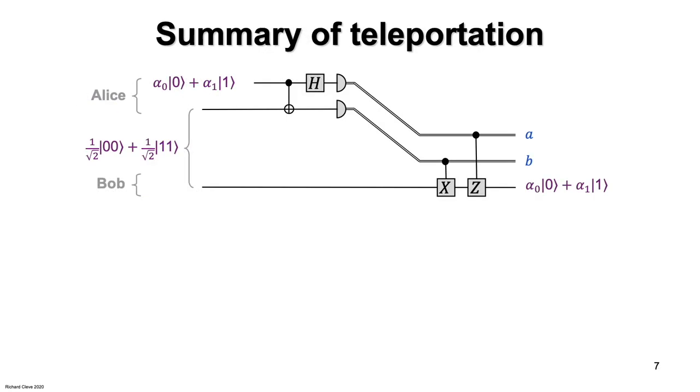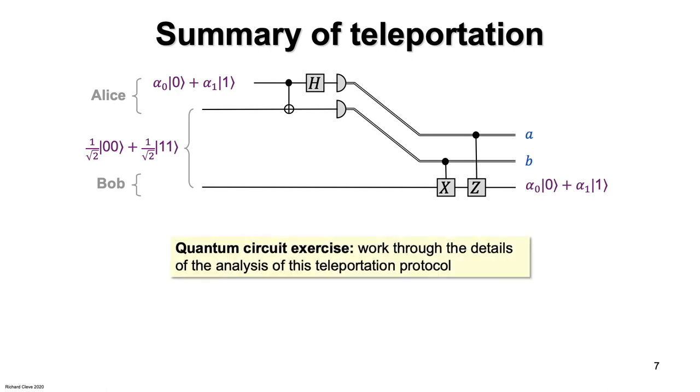Here is a circuit that summarizes the teleportation protocol. Alice's qubits and bits are on top and Bob's are on the bottom. You can see from the slanted wires that the two classical bits resulting from Alice's measurements are being shifted down from Alice towards Bob. You should be able to work through the circuit diagram to check that it works.